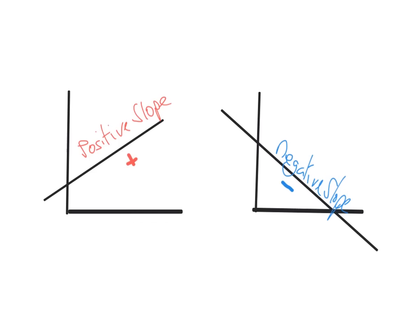How to figure out if a line has a positive or a negative slope? The easiest way to think about this is to think about the way we read — from left to right. So if the line is going uphill as we read from left to right, then it's positive.